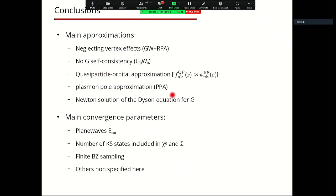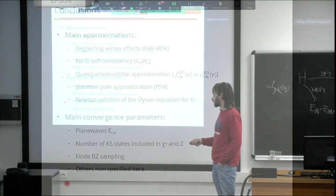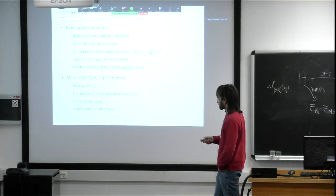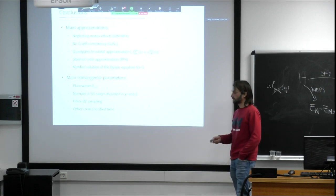The main convergence parameters are: the number of plane waves, controlled by an energy cutoff as in Quantum ESPRESSO; the number of Kohn-Sham states included in the calculation of K0 and the self-energy; and the finite sampling of the Brillouin zone. There are other minor parameters which should be kept under control, but these depend more on the specific system being considered.